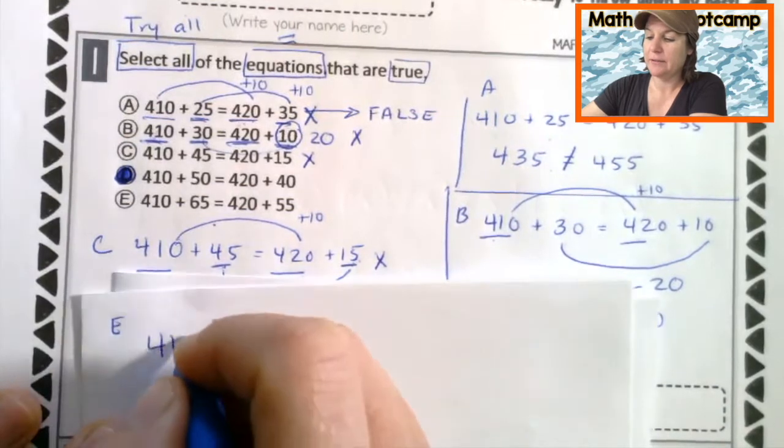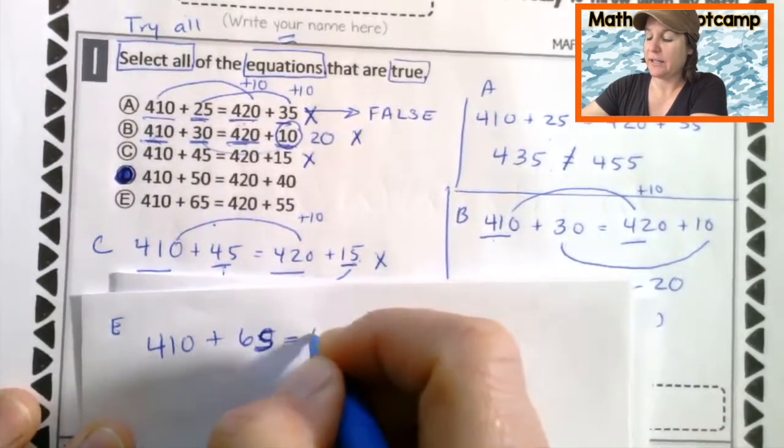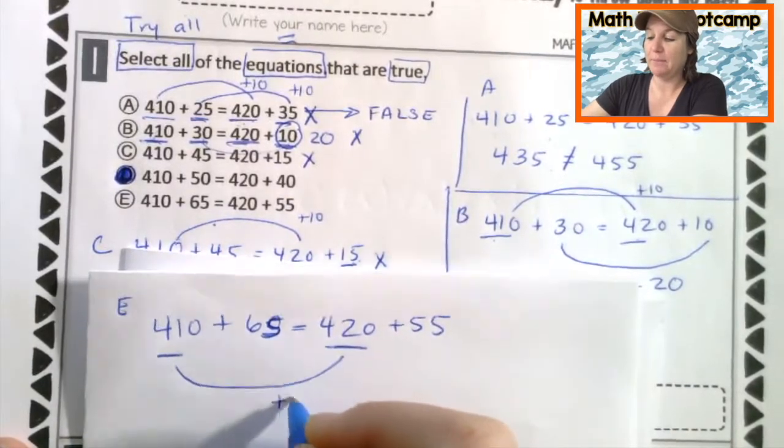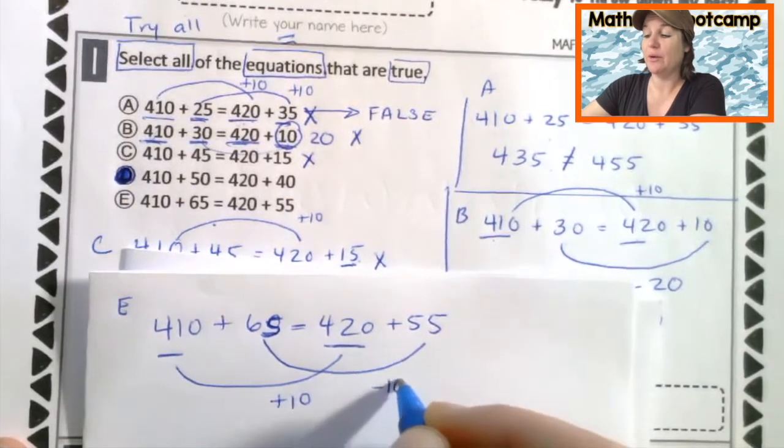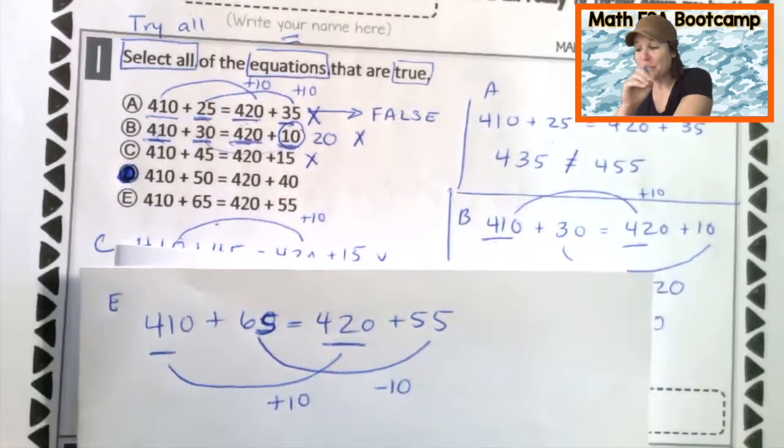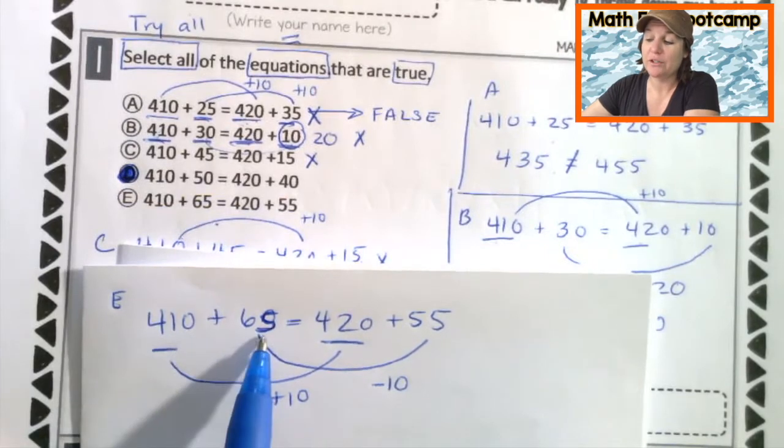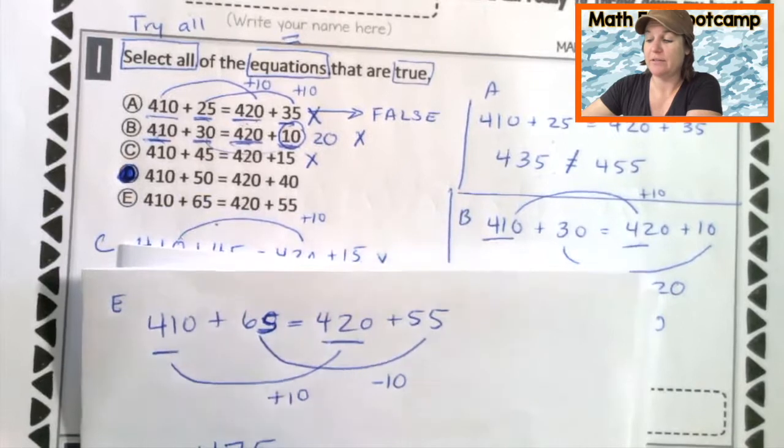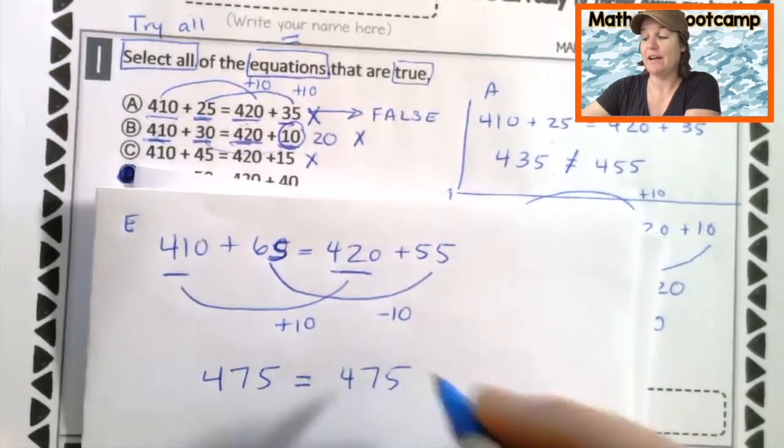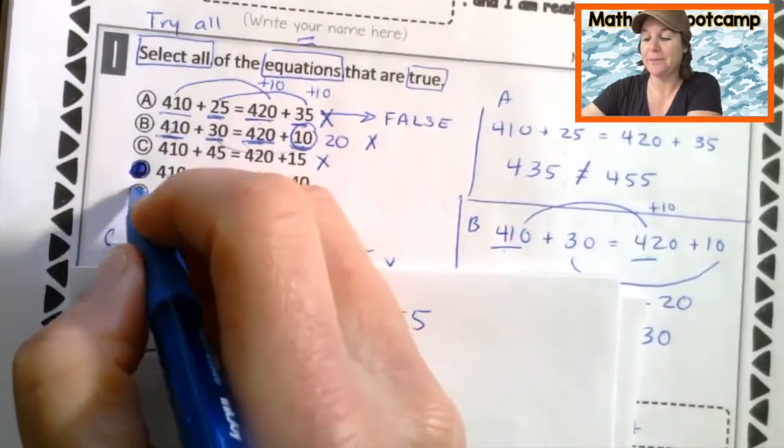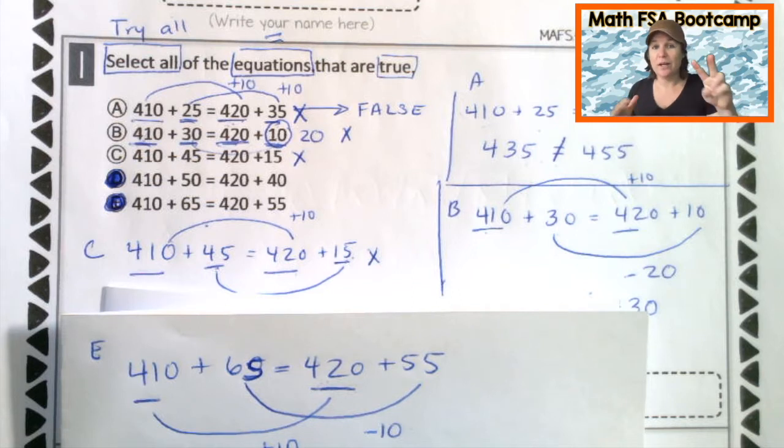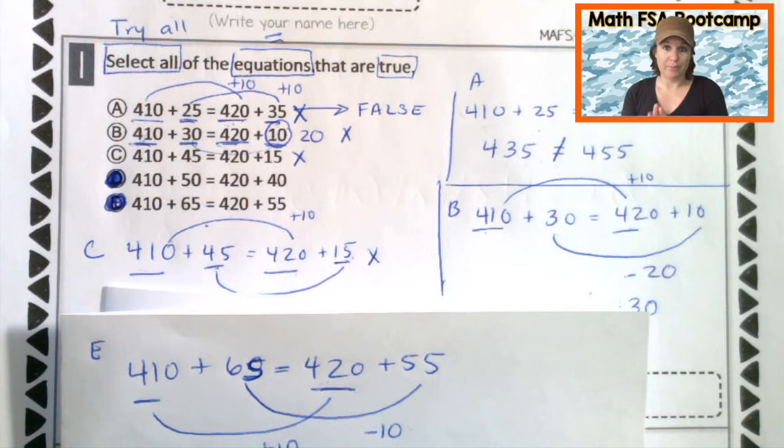E is 410 plus 65 equals 420 plus 55. Okay, so what they want you to do is take a look at the first two. We're going up by 10, which means 65 to 55. We should be going down 10 to make those balanced equations. So this would be true based on that reasoning. Again, we're getting around it by saying, okay, I don't really understand that, but I can focus on what I can do, which would be 410 plus 65 would give us 475. 420 plus 55 would give us 475. That is a true equation, so I can also mark E. So there you go. For all of those, I showed you two ways. The first way was the way that this standard wants you to think about the problems. The second way was focusing on what we can do to figure out if they are true, even though we added up both sides, okay?